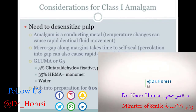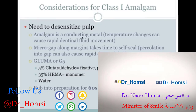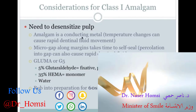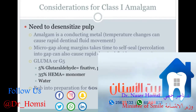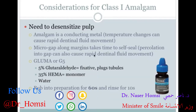Amalgam is a conducting metal and takes a while to seal, so desensitizing the pulp is essential, especially if the preparation went deep into dentin. One option is Gluma desensitizer — rub it into the preparation with a micro brush for about a minute, then rinse off. This plugs the dentinal tubules to eliminate post-operative sensitivity that the patient may experience.